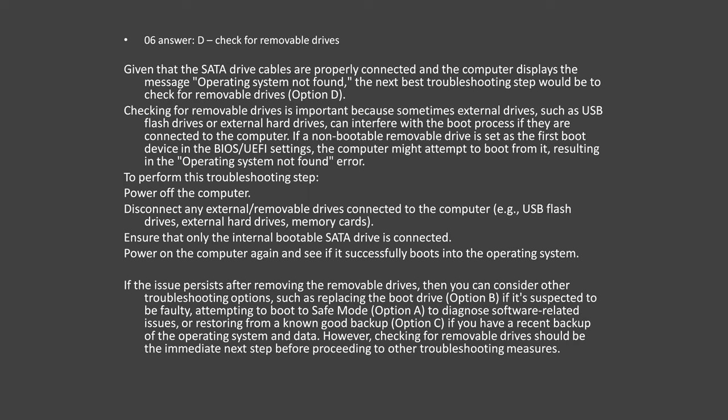To perform this troubleshooting step: power off the computer, disconnect any external removable drives (USB flash drives, external hard drives, memory cards), ensure only the internal bootable SATA drive is connected, then power on the computer again to see if it boots into the operating system. If the issue persists after removing the removable drives, consider other options such as replacing the boot drive (Option B) if suspected faulty, booting to safe mode (Option A) to diagnose software issues, or restoring from a known good backup (Option C). However, checking for a removable drive should be the immediate next step.